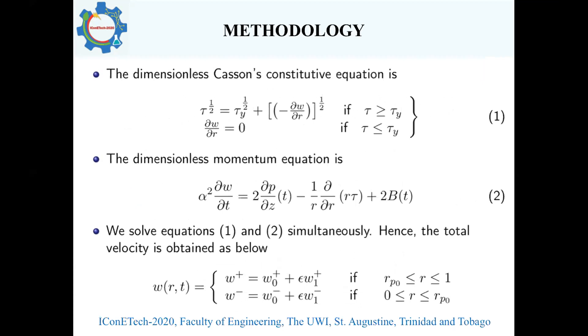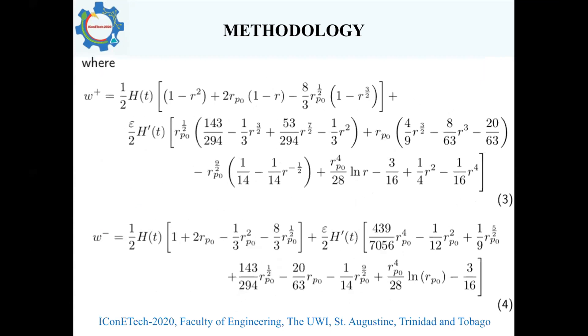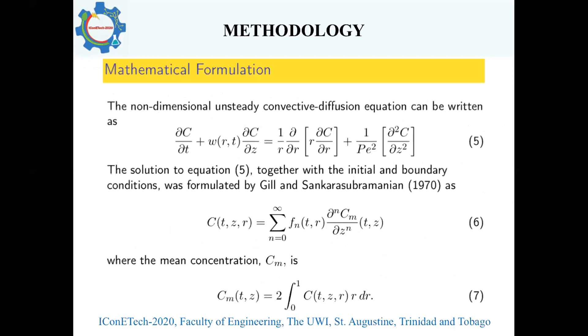For the velocity distribution we have equations three and four, where w superscript plus is the velocity in the shear region of flow and w superscript minus is the velocity in the plug region. In terms of mathematical formulation, we have the unsteady convective diffusion equation given by equation five. The solution along with initial and boundary conditions has been formulated by Gill and Sankarasubramanian 1970 and is given by equation six, where the mean concentration is defined by equation seven.